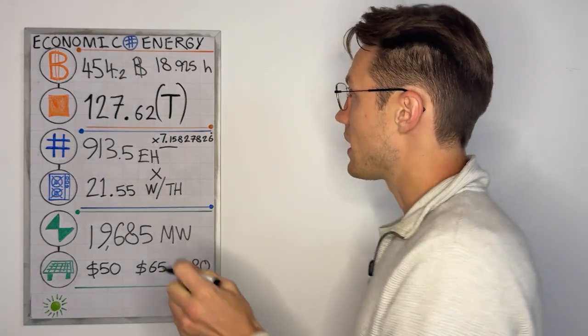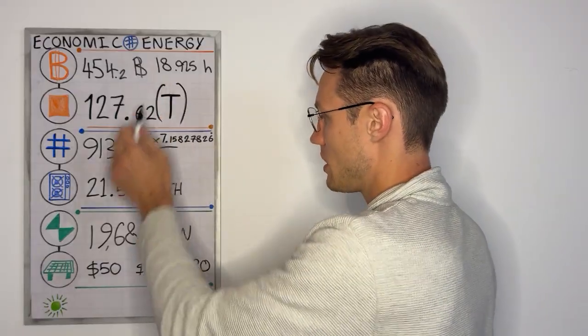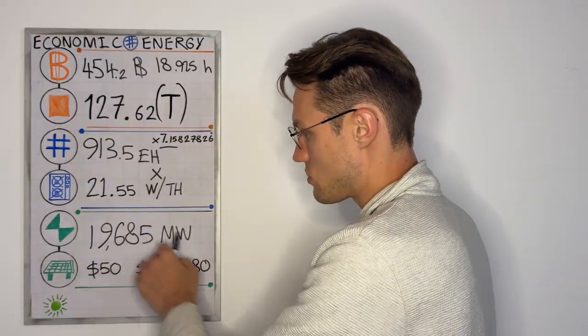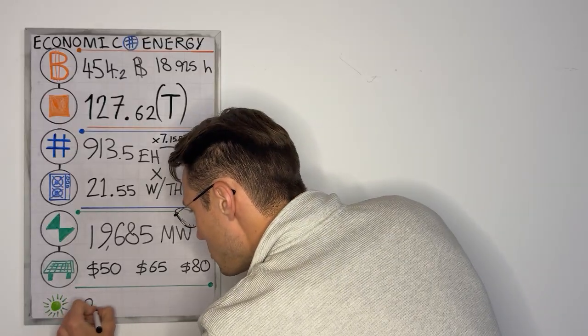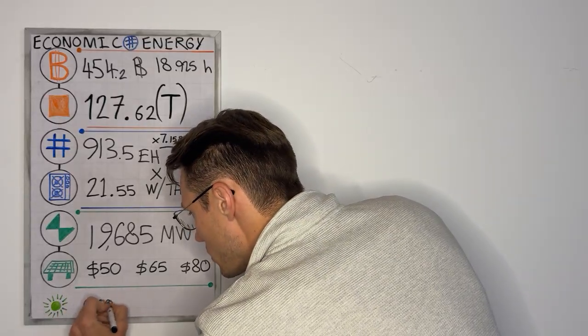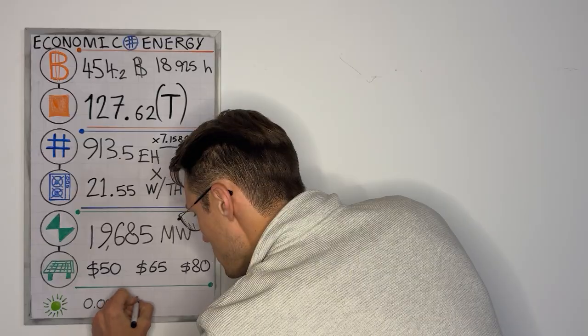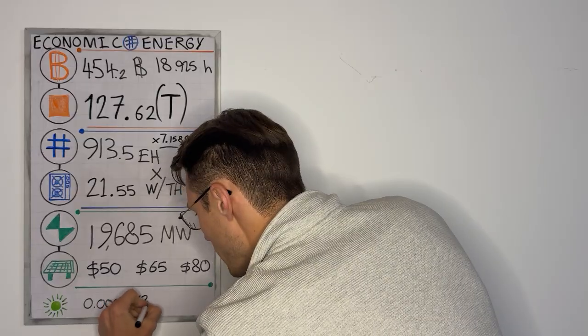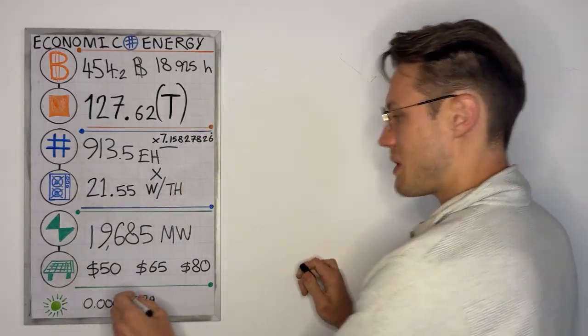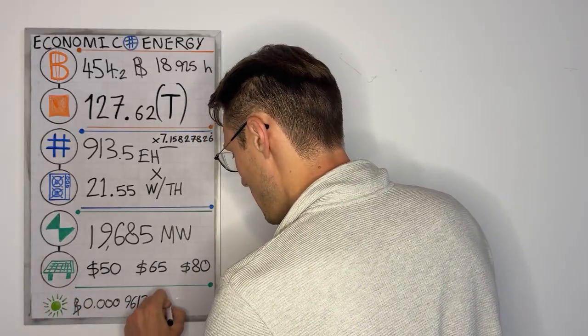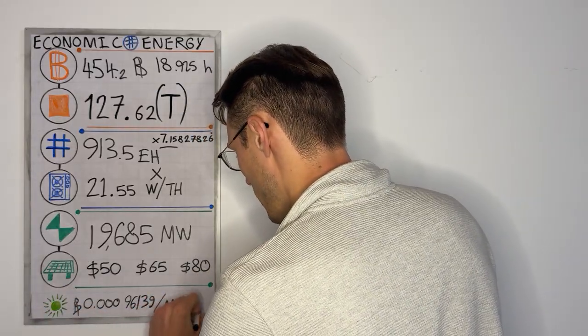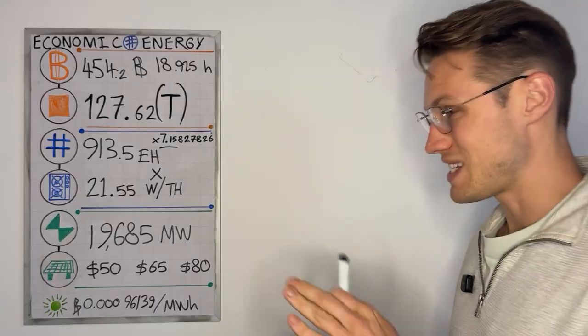Now, if you divide that amount of Bitcoin by 19,685, I'm going to have to write this out. So that's the amount of Bitcoin being earned per megawatt hour by the entire network as an average.